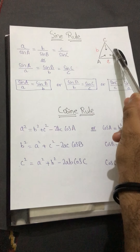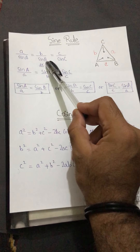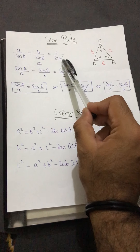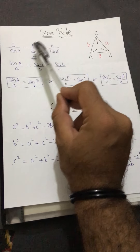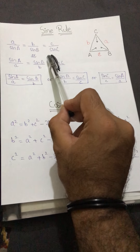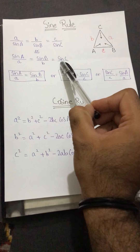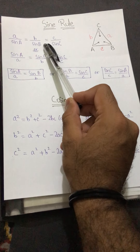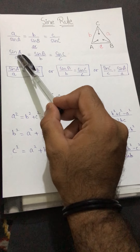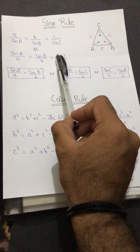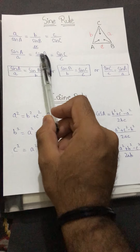We can write the sine rule as: a/sinA = b/sinB = c/sinC, where a, b, c are the lengths of the sides and sinA, sinB, sinC are the sines of the opposite angles. Alternatively, we write it as sinA/a = sinB/b = sinC/c. The first form is used when finding missing lengths, and the second when finding missing angles.